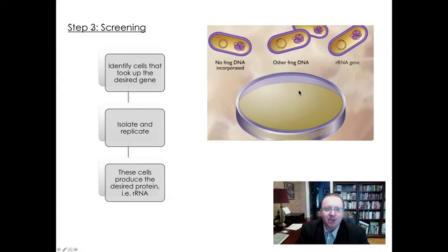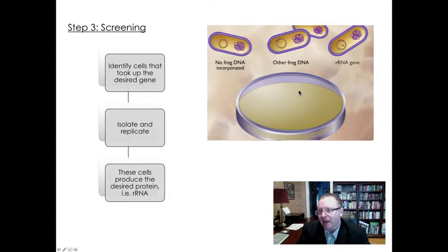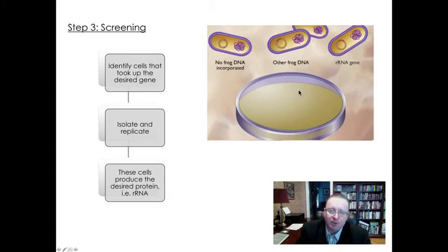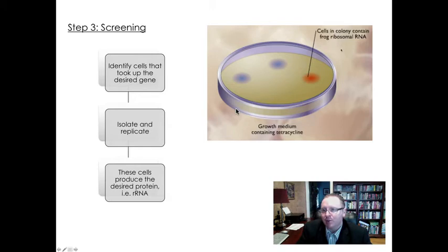The last step is step four: screening. The idea here is to identify the cells that took up the desired gene. When we do genetic engineering, some of those plasmids taken up will have our gene of interest — in the experiment you saw, that's the frog ribosomal RNA gene. There will be other cells that have bits and pieces of recombinant DNA we're not interested in, and some plasmids won't have any foreign DNA at all. We need to take up all of those bacteria and allow them to grow and replicate, then identify the cells that contain the gene of interest. We can isolate them and allow them to replicate so we're getting lots and lots of copies of the bacterial cell that produces the gene we're most interested in.